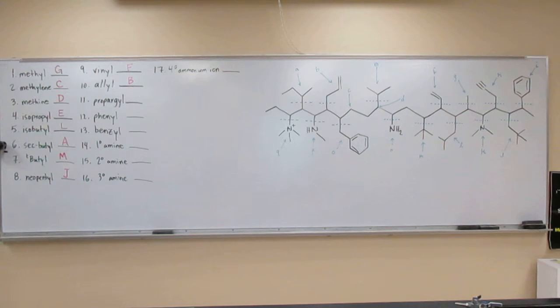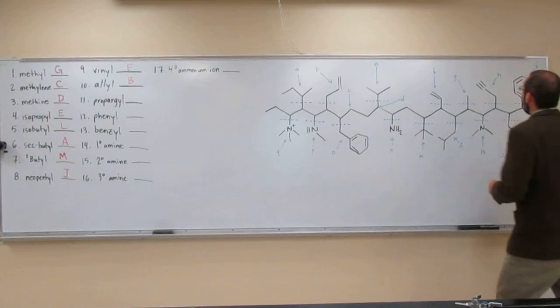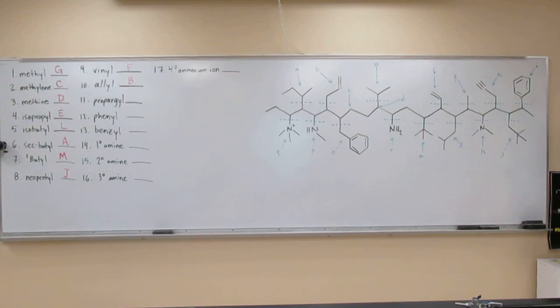Propargyl group, let's see. That one is a triple bond with a carbon attached at the substituent. So the triple bond here has a carbon attached to it, and that carbon is attached as the substituent.